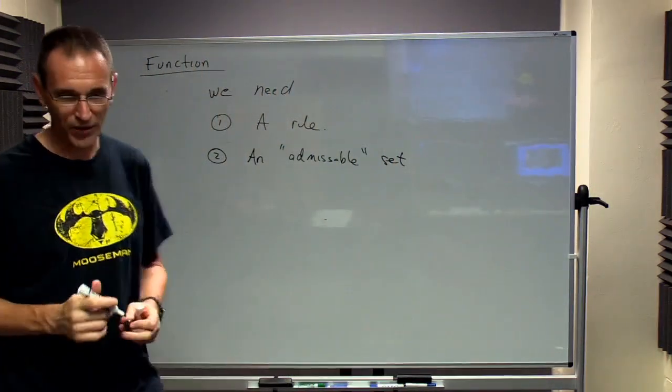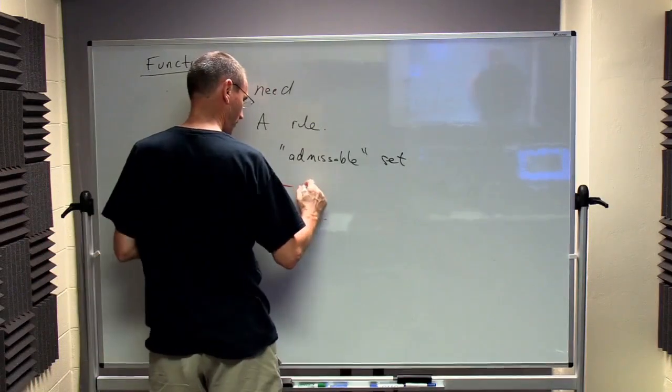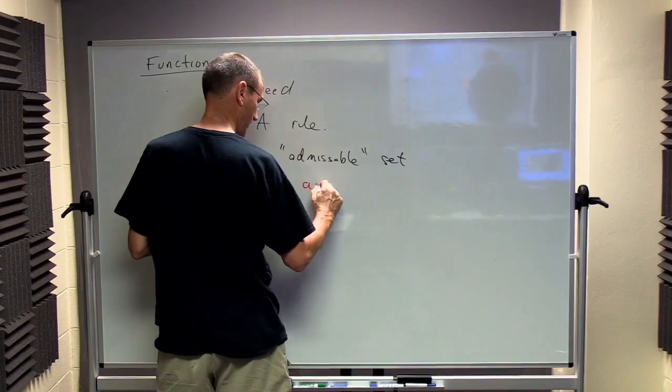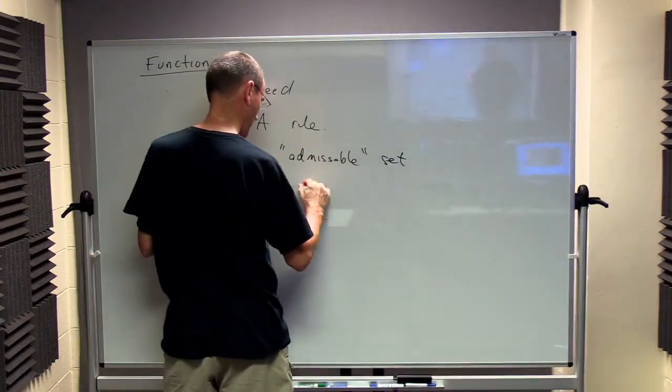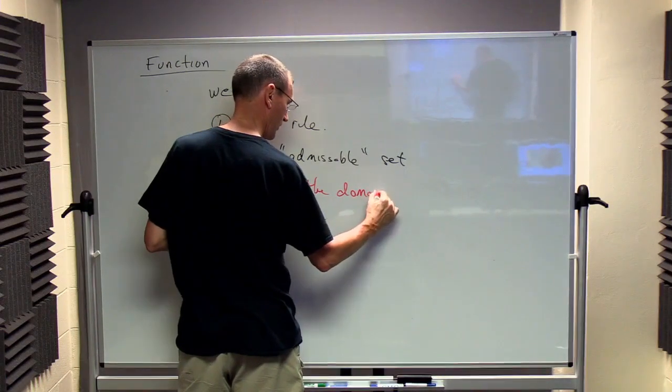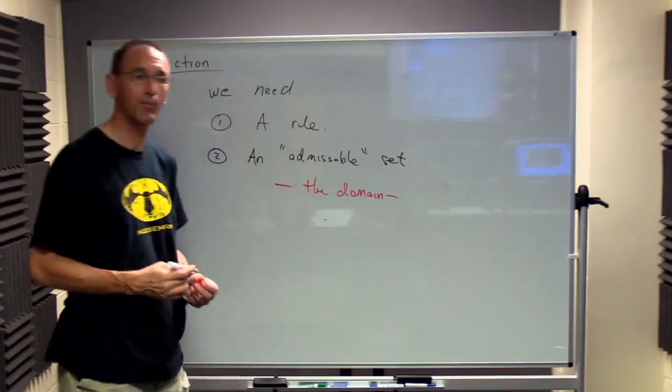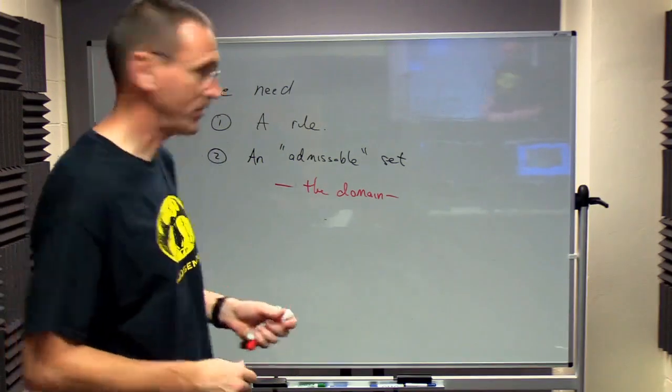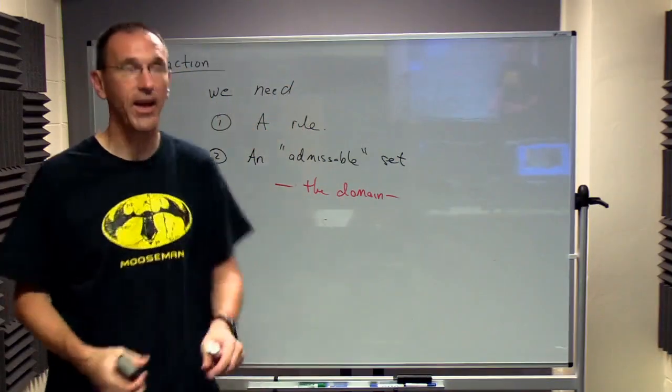So we need a rule or a set of instructions to allow us to make a calculation. And we need a set of values that we're going to call the admissible set. This is often referred to as the domain. So this is the domain, the set of things that we can put into the function. So we have to talk about both of these things as we proceed.